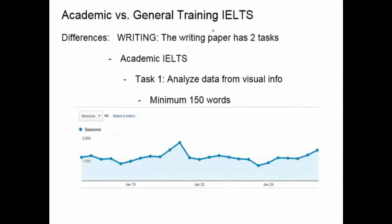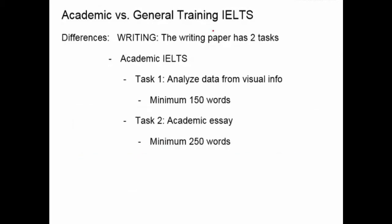In our writing section, we will have many examples of these types of questions and how to answer them. Task two on the academic IELTS is an academic essay, for which you'll write a minimum of 250 words. For task one, the minimum was 150 words.